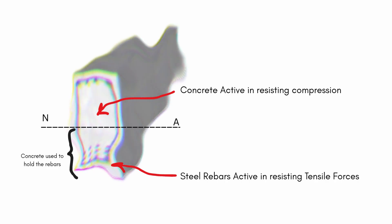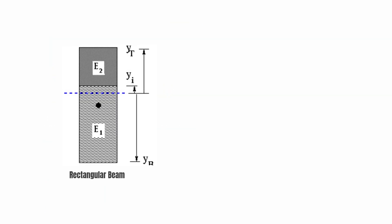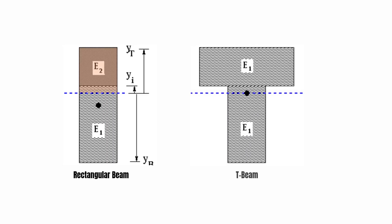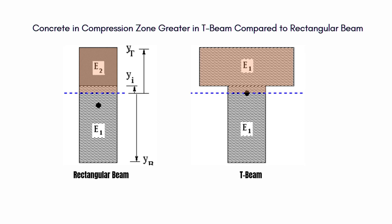So, in a rectangular beam, the compression zone is limited to the narrow top portion of the beam, restricting its moment-resisting capacity. But in a T-beam, the entire flange area lies above the neutral axis — in the zone where compression is greater. This adds a significant amount of concrete to the compression zone, improving the bending strength without increasing the depth of the beam.